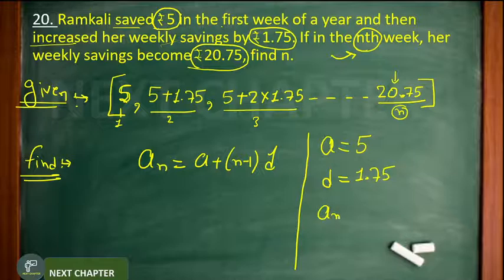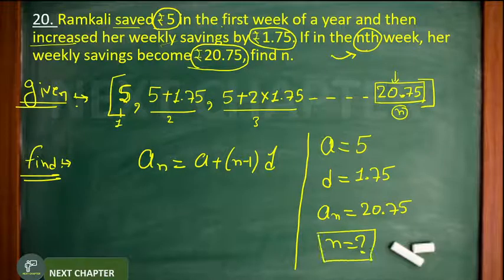After that, the value of an. What is an? The term that you have reached. So the term will be 20.75. You have to find the value of n. At which n will this amount convert to 20.75? Put the value of an, put the value of a, put the value of d, just calculate and find the value of n.